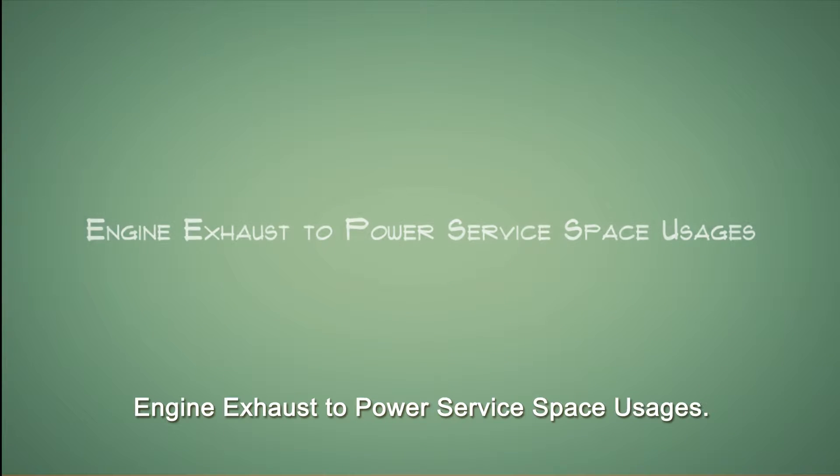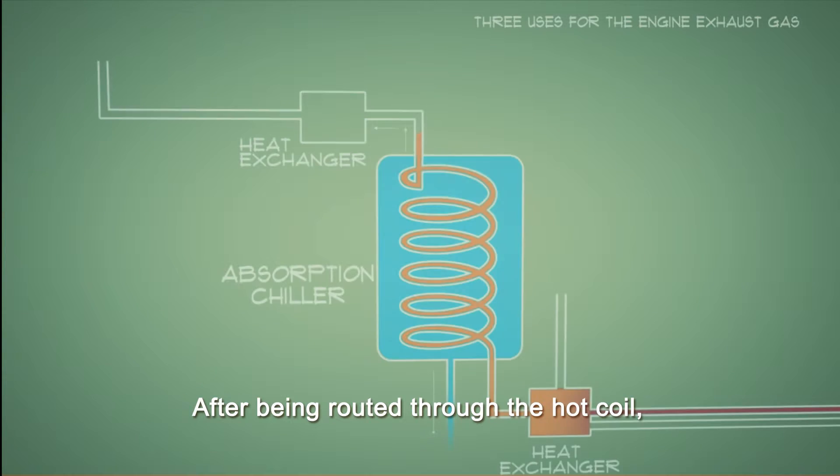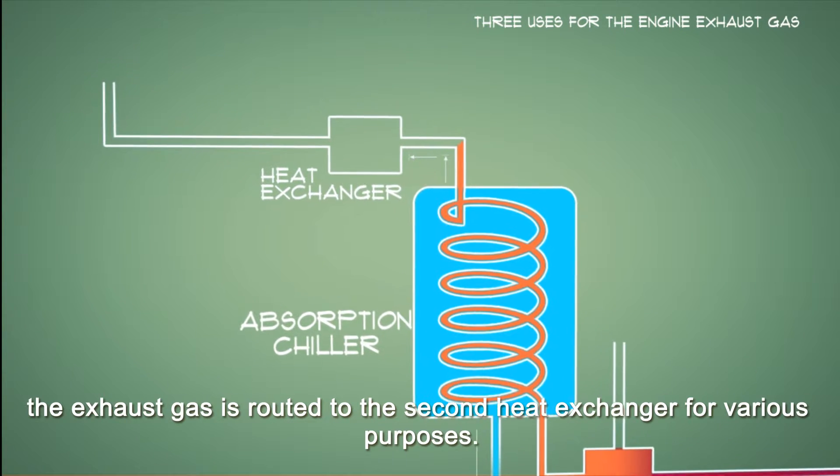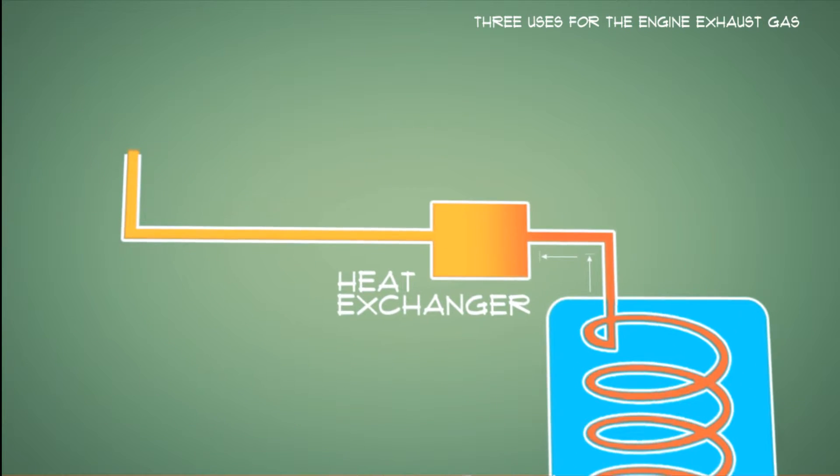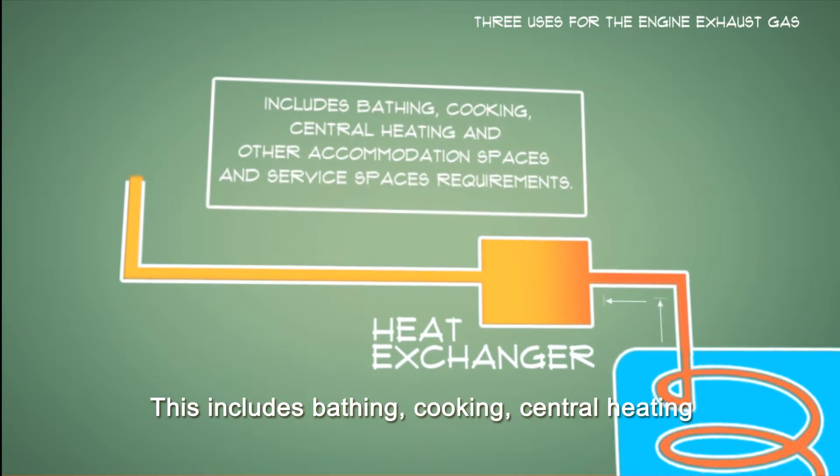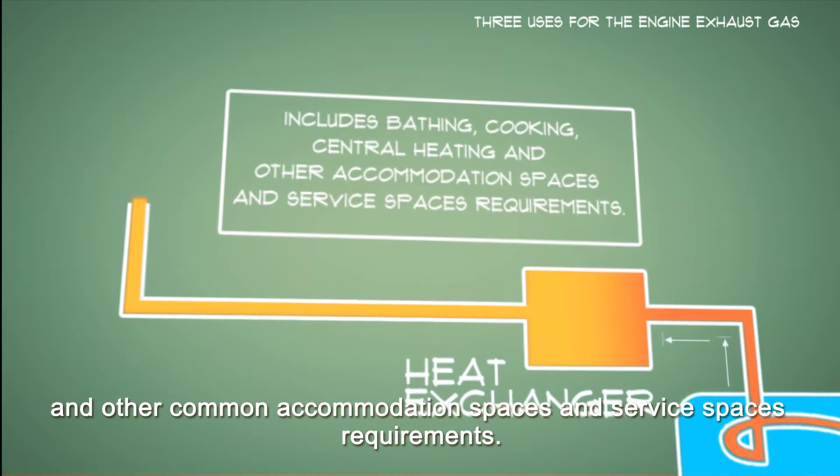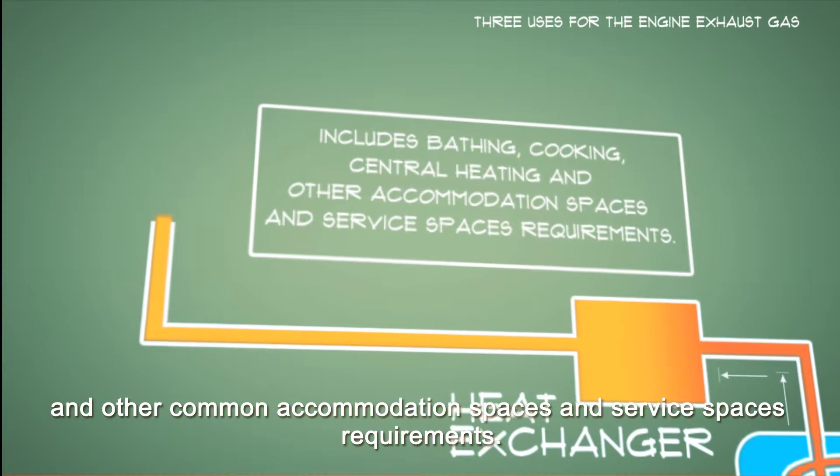Secondly, engine exhaust to power service space usages. After being routed through the hot coil, the exhaust gas is routed to the second heat exchanger for various purposes. This includes bathing, cooking, central heating and other common accommodation spaces and service spaces requirements.